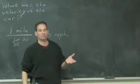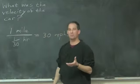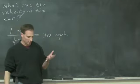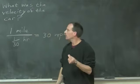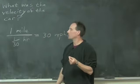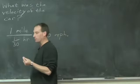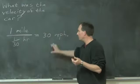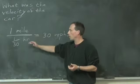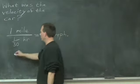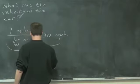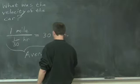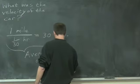Which did I mean? Neither, both — I was deliberately ambiguous. The speedometer reading is the velocity at points in time; that's the instantaneous velocity, which we'll discuss later. The quantity where the car traveled one mile in one-thirtieth of an hour is called the average velocity between those times.